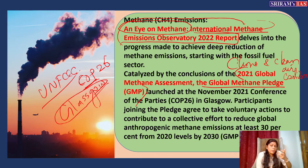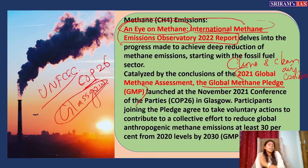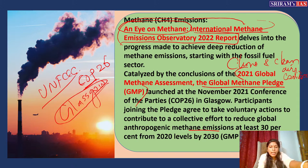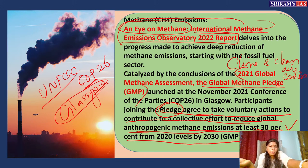The Global Methane Pledge (GMP) is a commitment to take voluntary action to contribute to the collective effort to reduce global anthropogenic methane emissions by at least 30 percent from 2020 levels by 2030. This pledge was agreed upon by participating countries at the Glasgow conference.